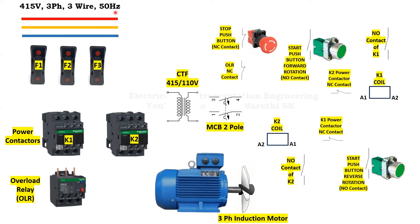Here is the bus bar — R phase, Y phase, B phase. This is the 415V, 3-phase, 3-wire, 50 Hz bus bar. After the bus bar, we have added three fuses named F1, F2, and F3. After that, we have added two power contactors called K1 and K2. After the two power contactors, we have added an overload relay, shortly called OL. And then the 3-phase induction motor, which is the final control element.